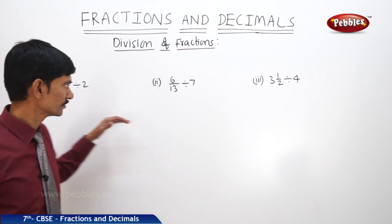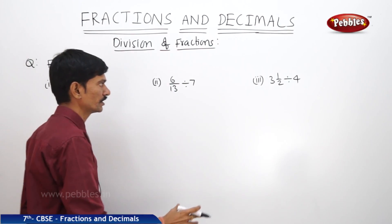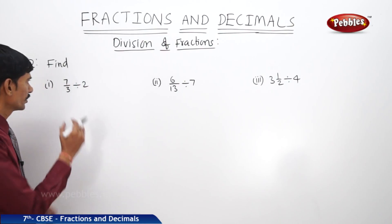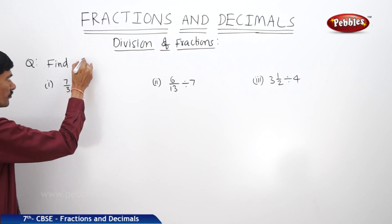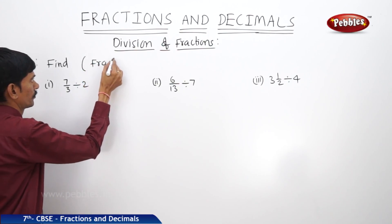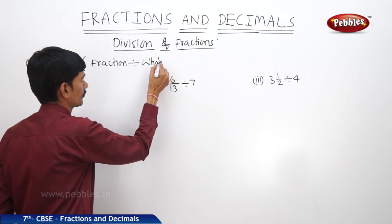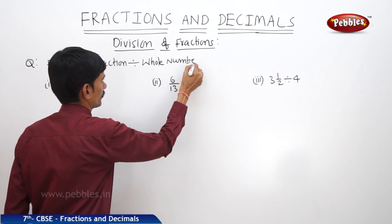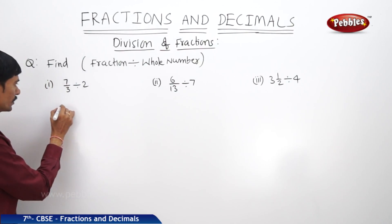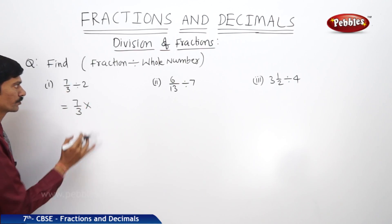Now let us solve the next question. Find 7/3 divided by 2, 6/13 divided by 7, and 3½ divided by 4. In each case a fraction is divided by a whole number. When dividing a fraction by a whole number, we write the fraction as it is and multiply by the reciprocal of the whole number.